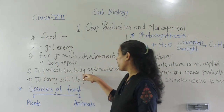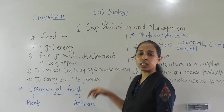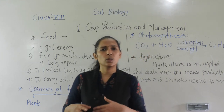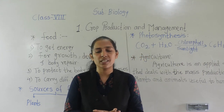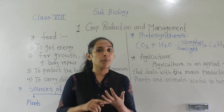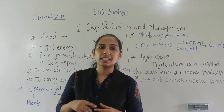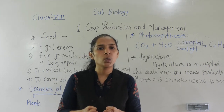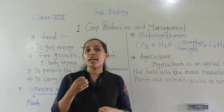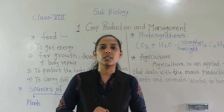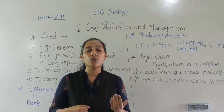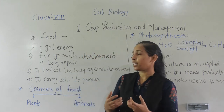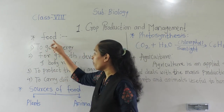We also require food to protect the body against diseases. As we know, there are different types of nutrients: carbohydrates, fats, protein, vitamins, and minerals, and each nutrient has a specific role in our diet. Vitamins and minerals are called protective food because they help to protect our body, and we get them from food.